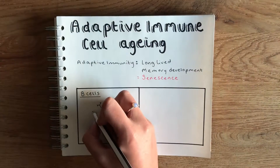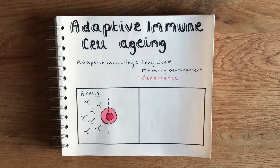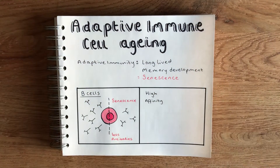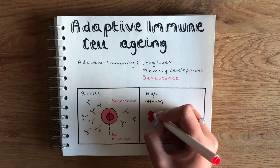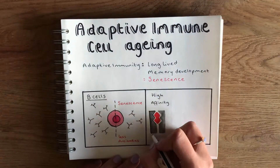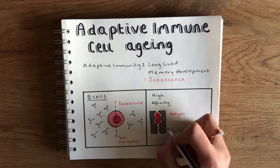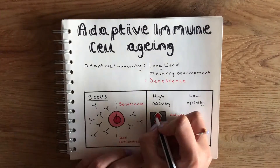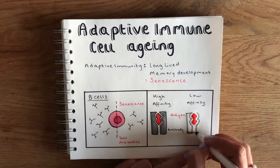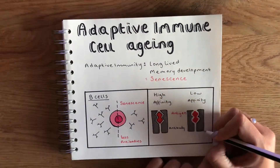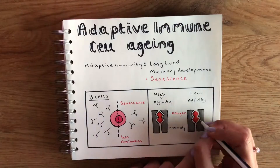Senescent B cells have been shown to secrete significantly less antibody than non-senescent B cells, and the antibodies that they do secrete tend to have decreased affinity for antigen — meaning the strength of the interaction between the antibody and the antigen is much weaker.